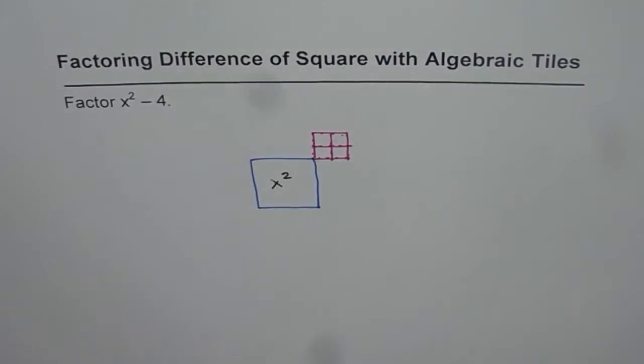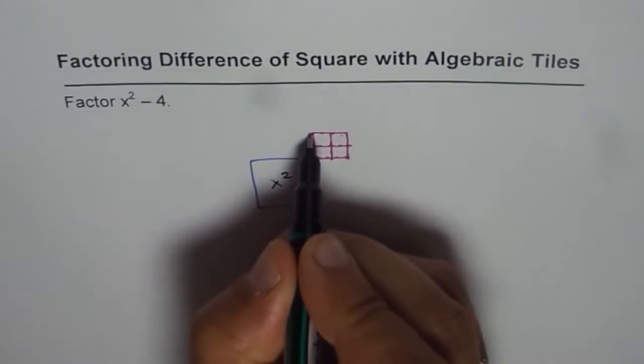Now that forms the grid, which can be completed to make a rectangle. Now to make this rectangle, what we can do is, we can add and subtract same number of x tiles. So let us first add the x tiles.